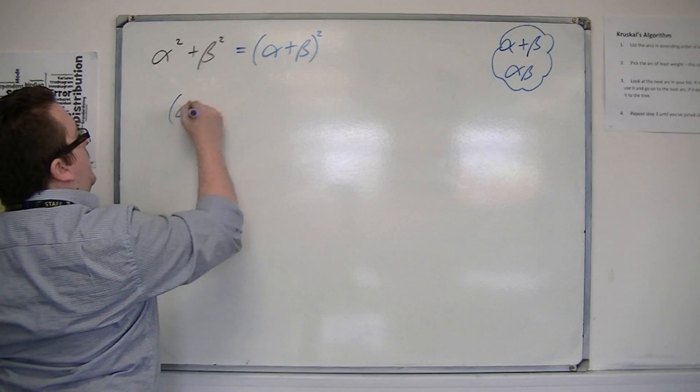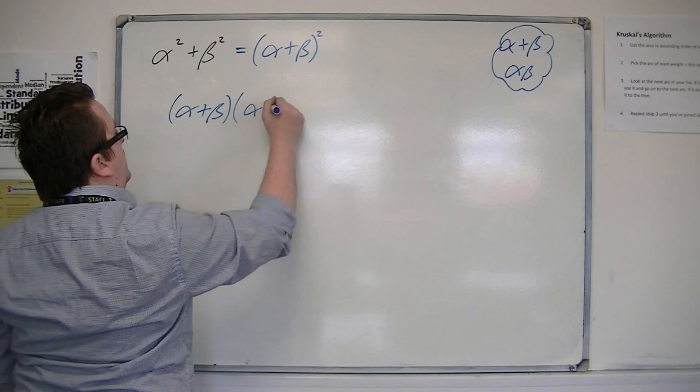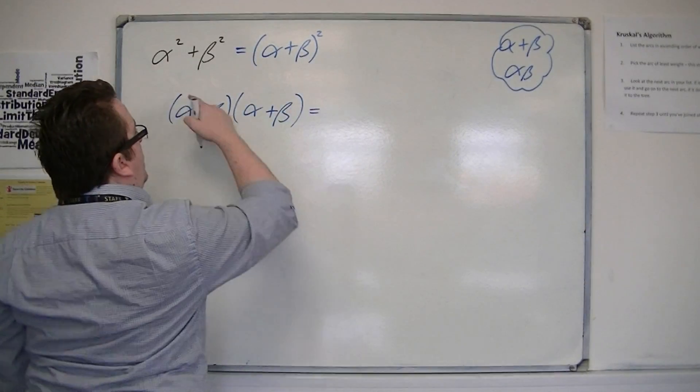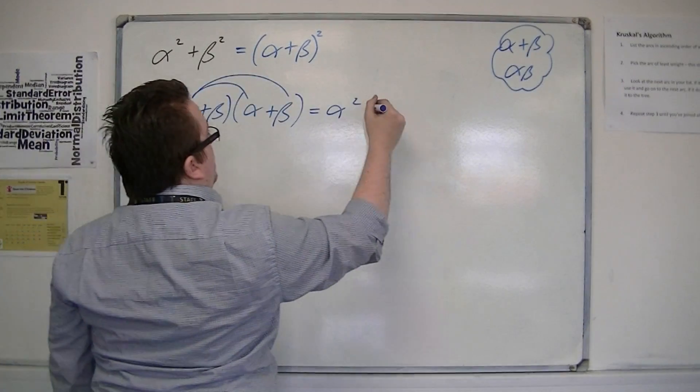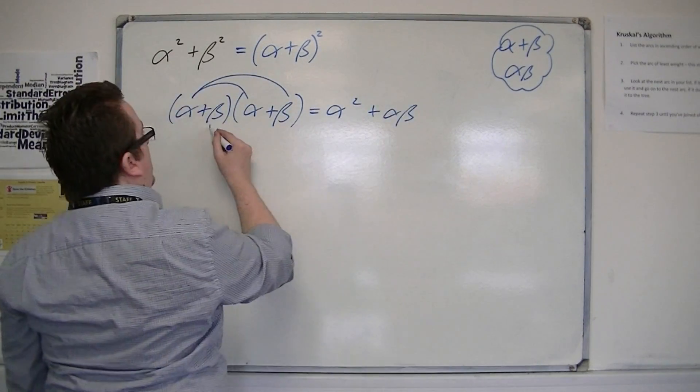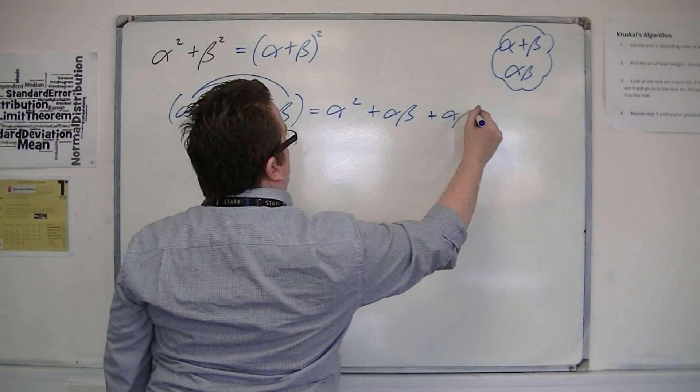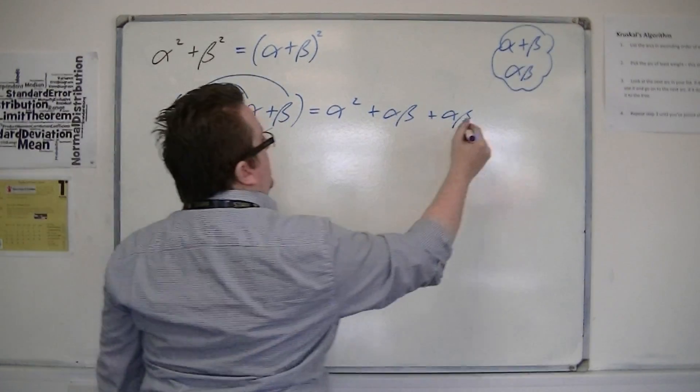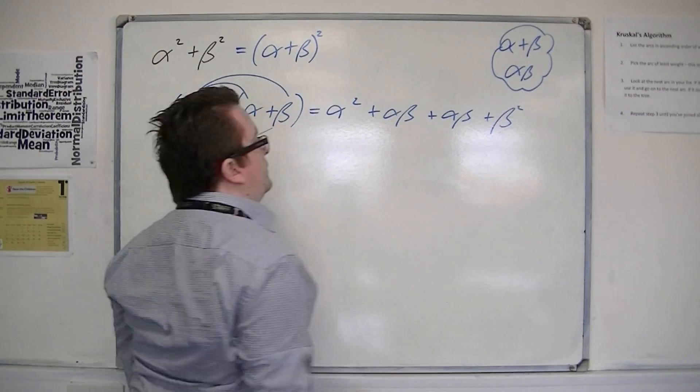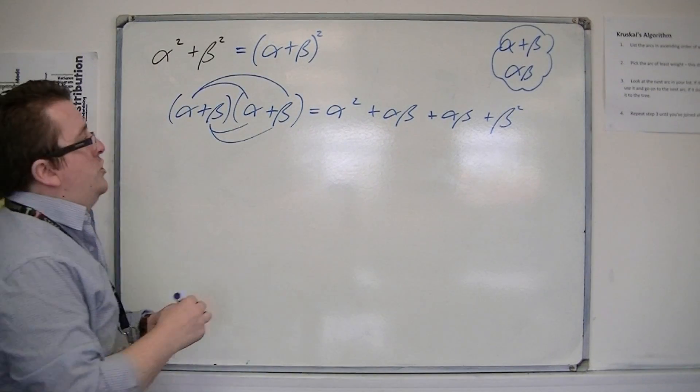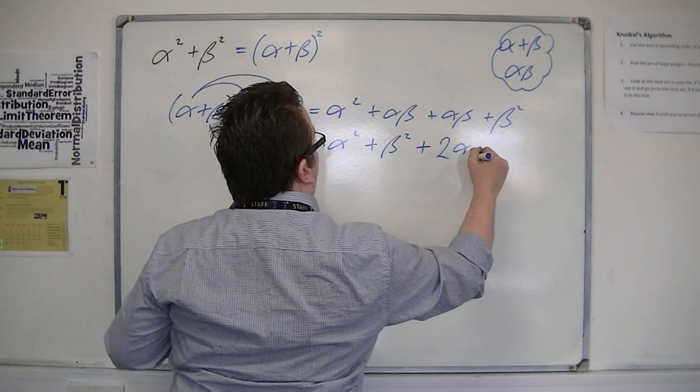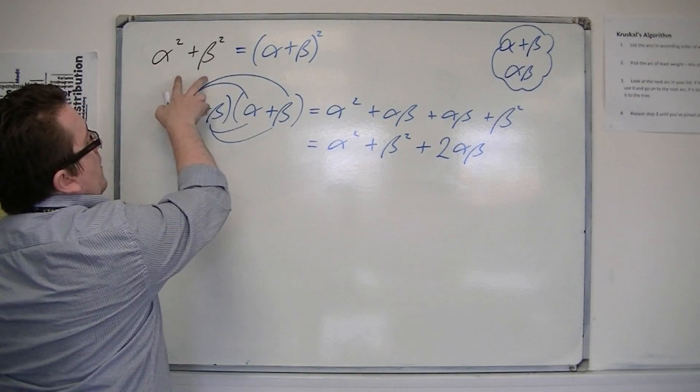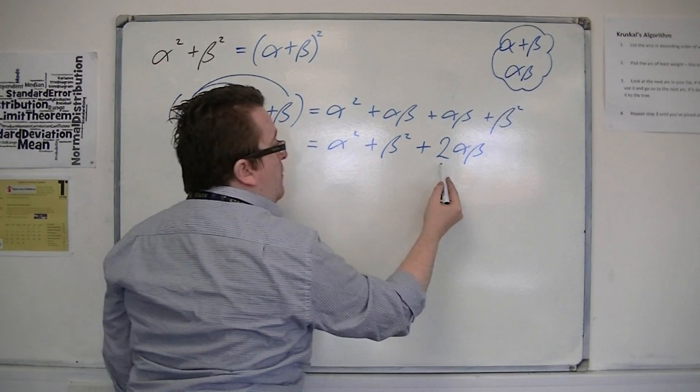When you expand alpha plus beta times alpha plus beta, we get alpha squared plus alpha beta, plus alpha beta, plus beta squared. So, I actually get alpha squared plus beta squared, plus 2 alpha beta. So, I get what I want, but I get an extra 2 alpha beta.